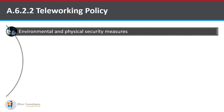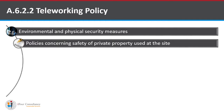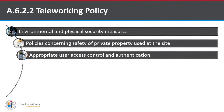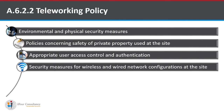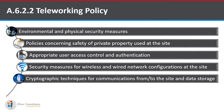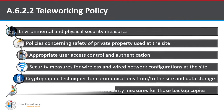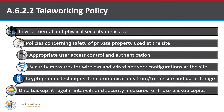A.6.2.2, that is teleworking policy, focuses on: environmental and physical security measures; policies concerning safety of private property used at the site; appropriate user access control and authentication; security measures for wireless and wired network configuration at the site; cryptographic techniques used for communication to and from the site and for stored data; and data backup at regular intervals along with security measures for those backup copies to protect against threats and to secure the data.